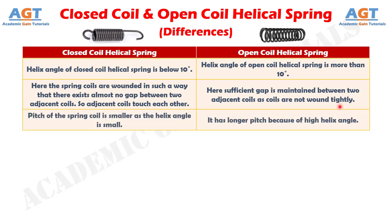Number 3: In a closed coil helical spring, the pitch of the spring coil is smaller as the helix angle is small. Whereas an open coil helical spring has a longer pitch because of its high helix angle.